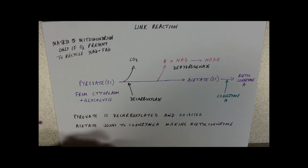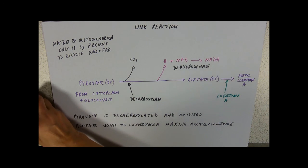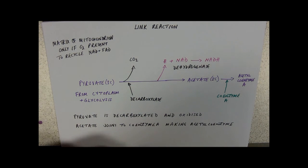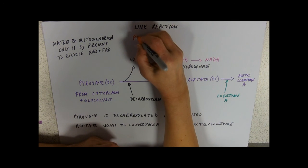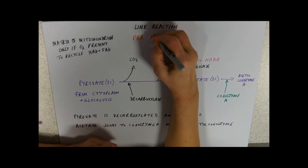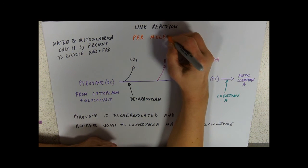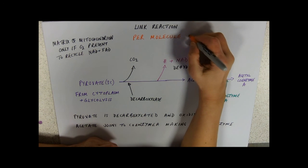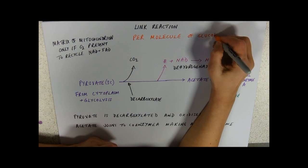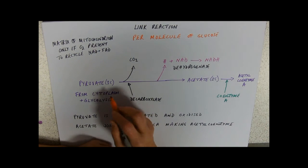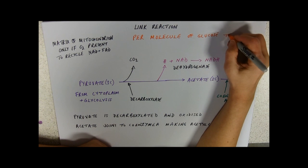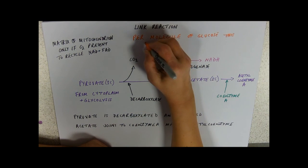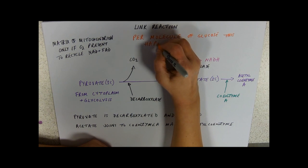You've got this product of carbon dioxide. Important things about the link reaction: probably the most important thing is that per molecule of glucose, in glycolysis we'll make two pyruvates, so this happens twice per molecule of glucose.